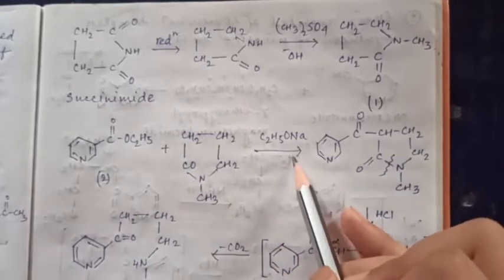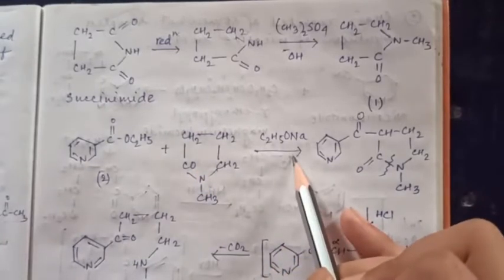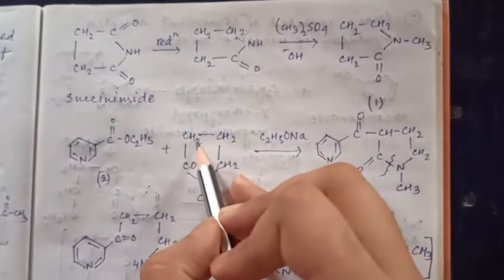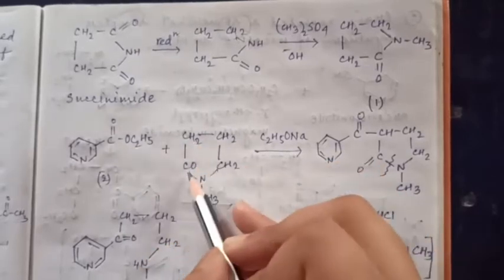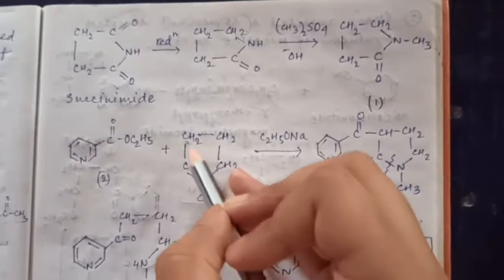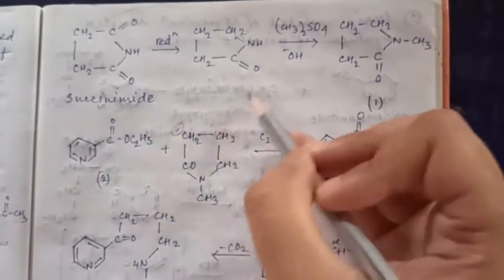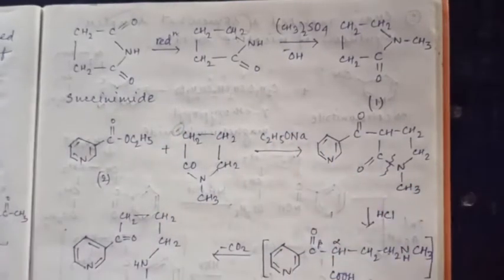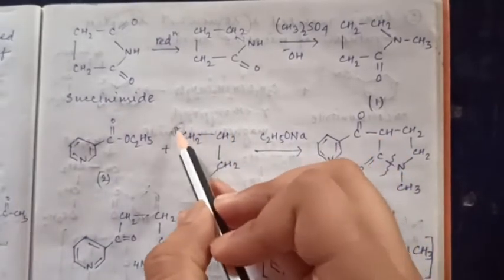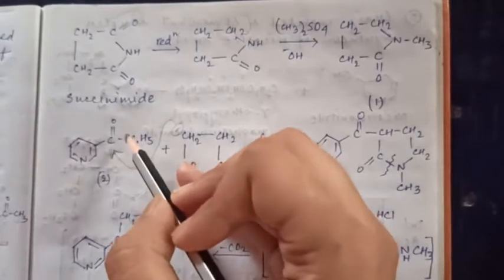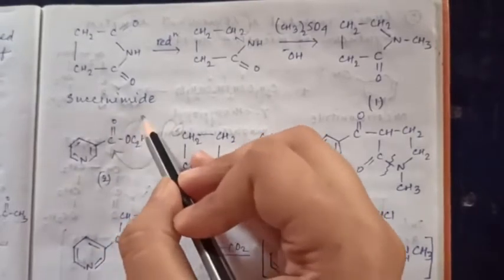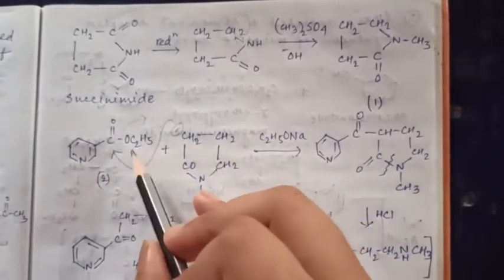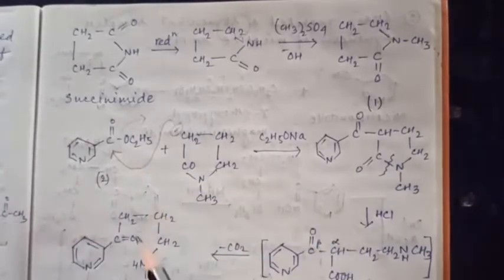This N-methylpyrrolidinone structure is treated with ethyl nicotinate in the presence of a base. The base is a hydride. The two positions are acidic because of the C=O group, so a negative charge forms, allowing nucleophilic attack. The OC2H5 (ethoxy) group is present here.